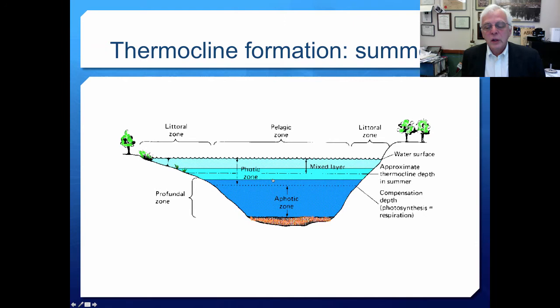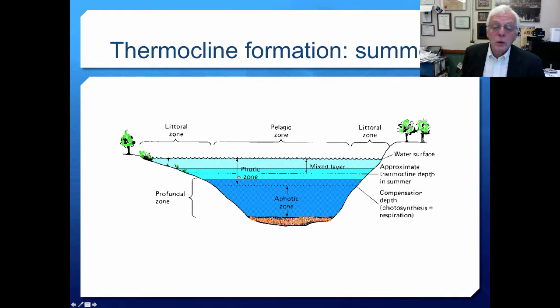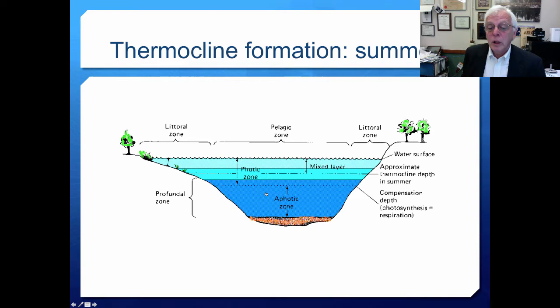In the summertime a thermocline is formed - an area of very rapid temperature change. You can feel this yourself if you dive down about 10 meters or 30 feet in a fairly large lake. The ecosystem is divided into three layers: the epilimnion at the top, the metalimnion in the middle where temperature changes rapidly, and the hypolimnion at the bottom - 'hypo' meaning under the lake. The thermocline is found in the middle of the metalimnion.